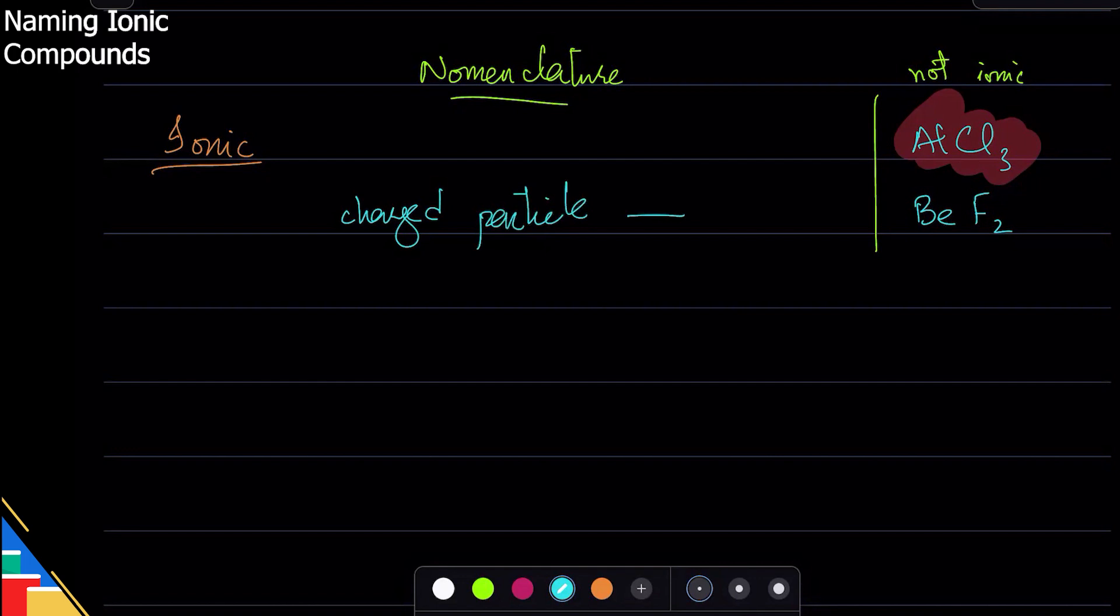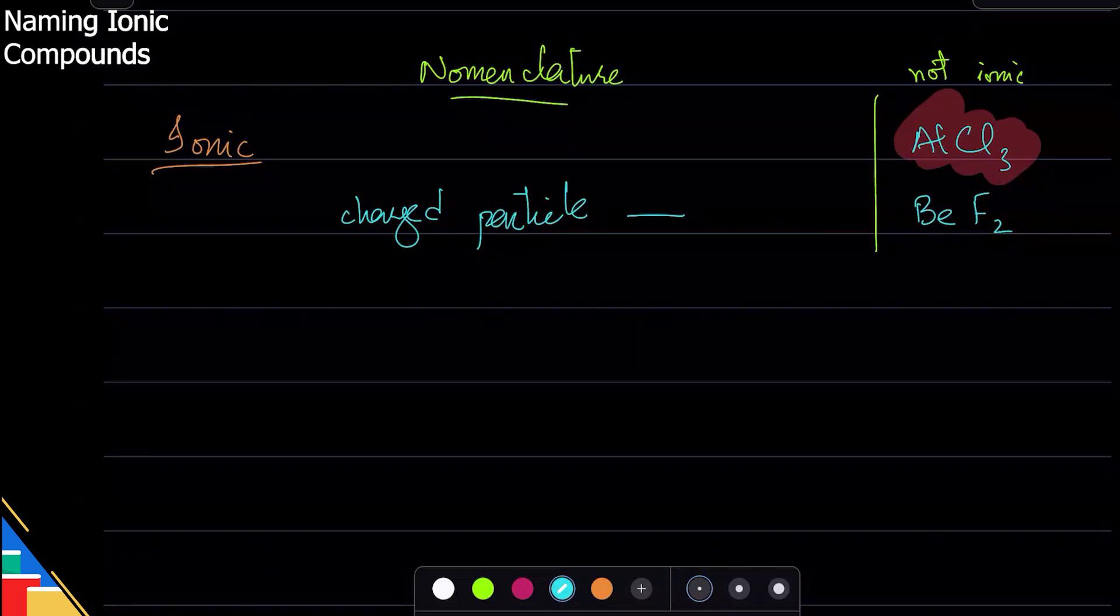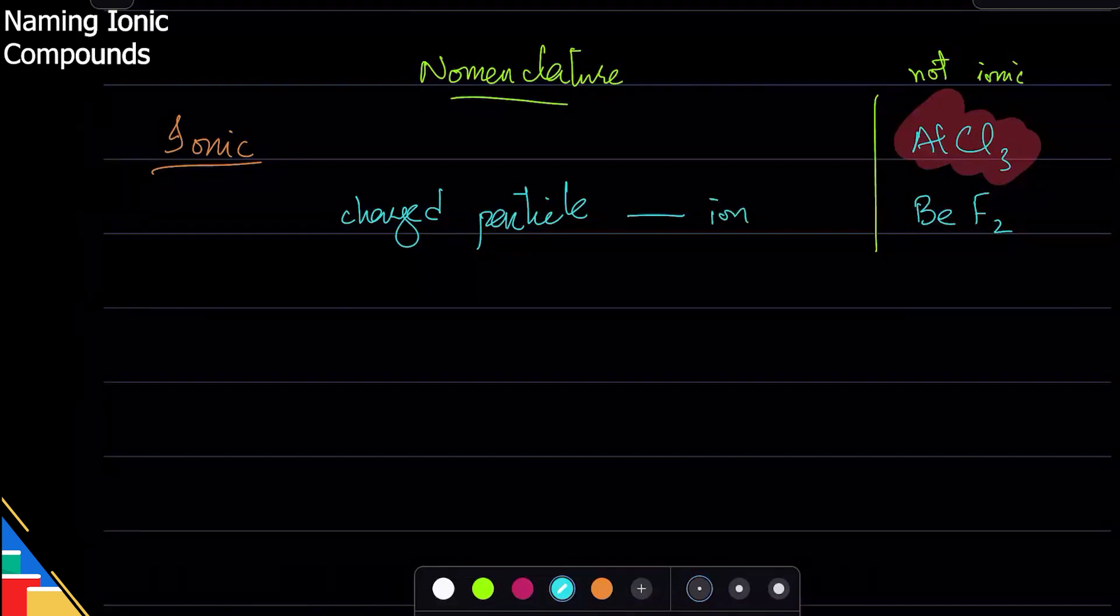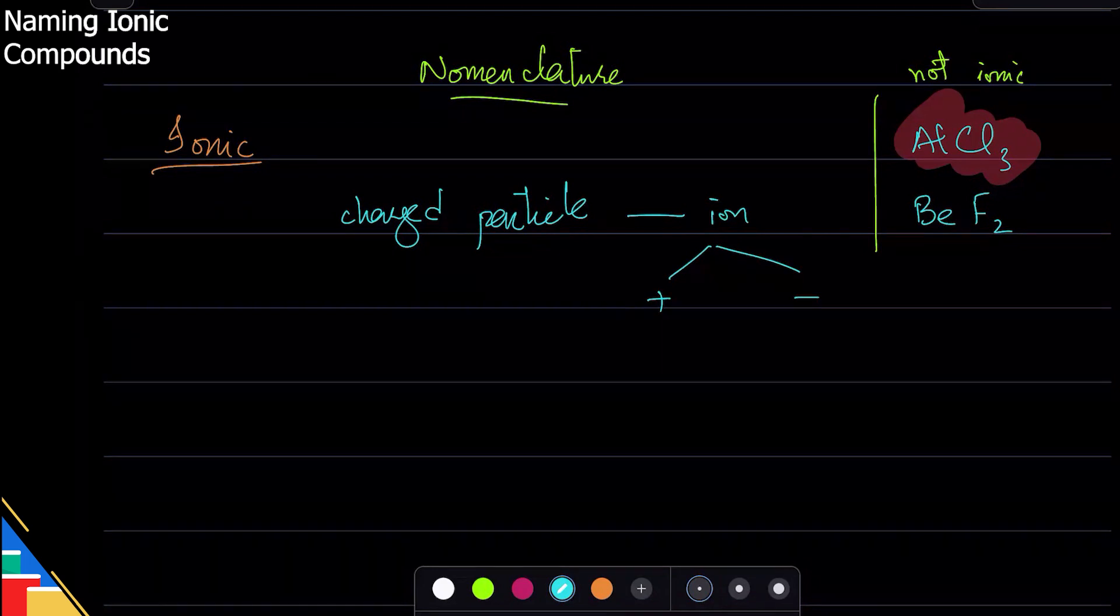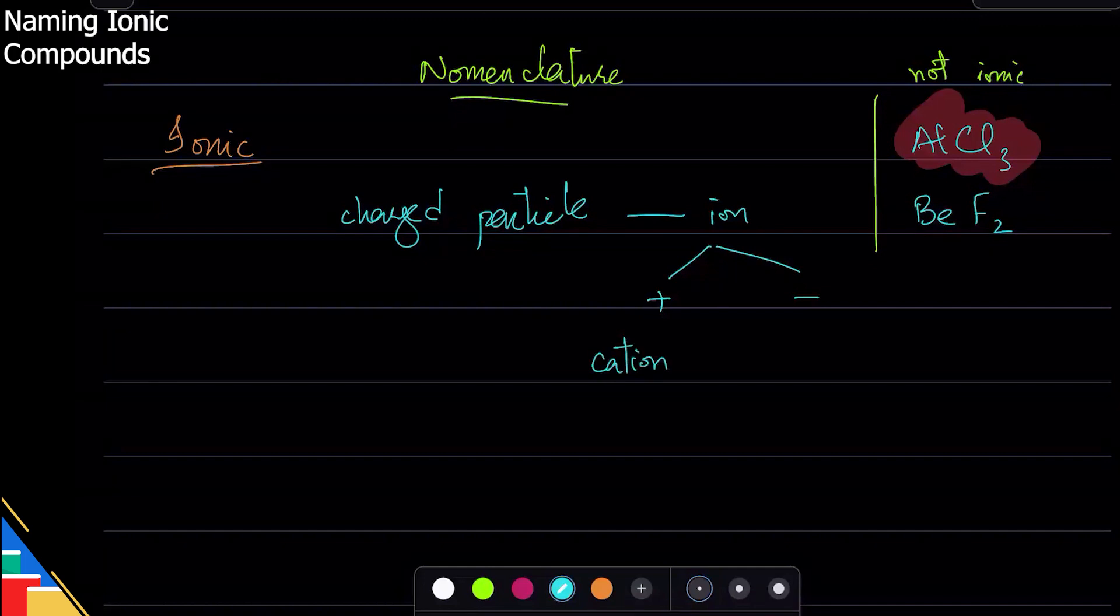What is another term for charged particle that we have in chemistry? Ions, ions, yeah absolutely. Charged particles are ions. There's two kinds of charges, right? There's positive charge and there's negative charge, and that means there's two kinds of ions. What do we call the positive ions? Cations, cations yes. And what do we call the negative ions?